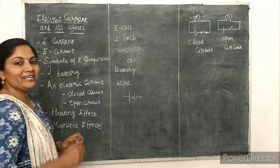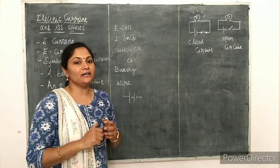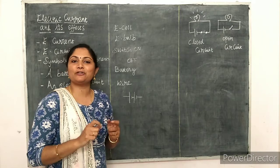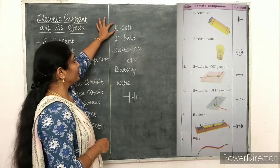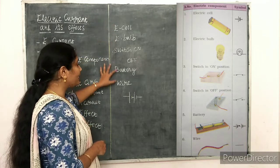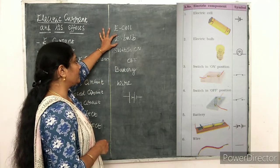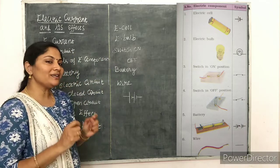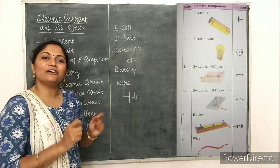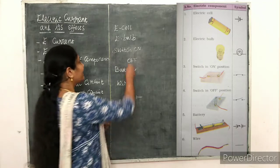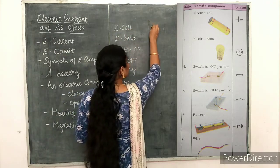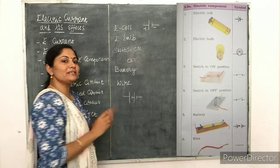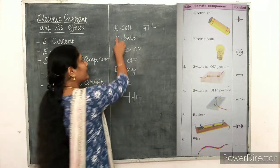Next, the symbols of electric components. In 7th standard, we are going to learn about simple electric components which are essential in order to form a simple electric circuit — such as electric cell, electric bulb, switch in on and off condition, battery, and wire. An electric cell has two terminals: one is the positive terminal, which is a long line, and one is a negative terminal. This is the electric symbol for an electric cell.